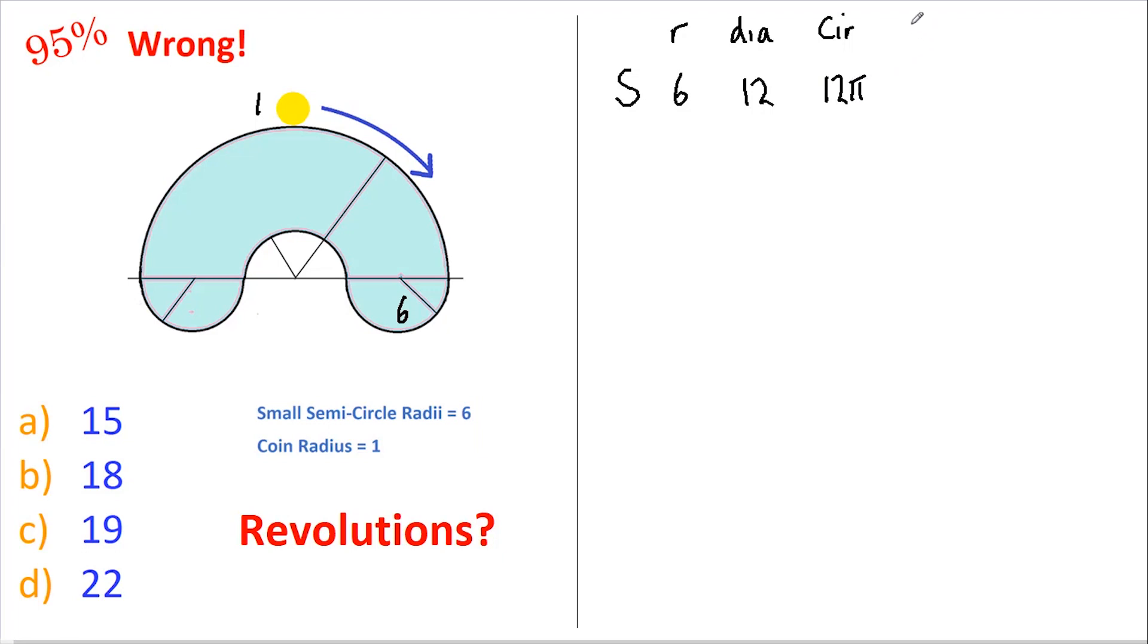And it has a semi-circumference, halfway round, of 6π. These are all identical. There's three of these, so we have a total of 18π.